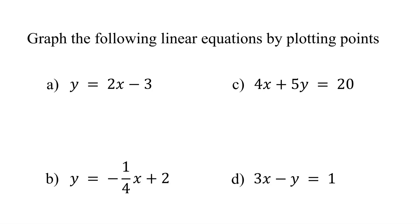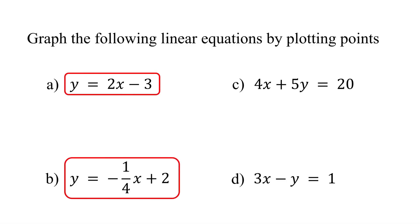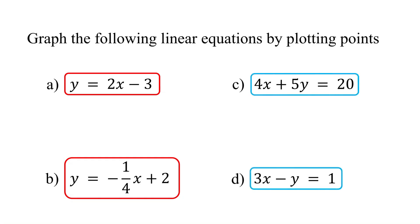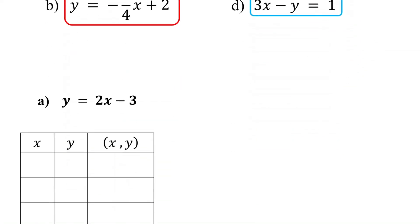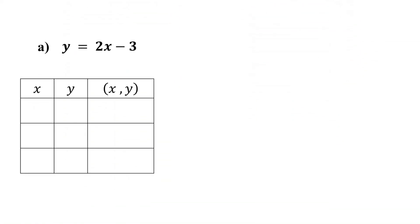In this lesson, you will learn how to graph a linear equation by plotting points, also known as using a table of values. We will cover examples where y is isolated on one side of the equation and where both x and y are on the same side. When y is isolated, the first step is to find three points that are solutions to the equation.